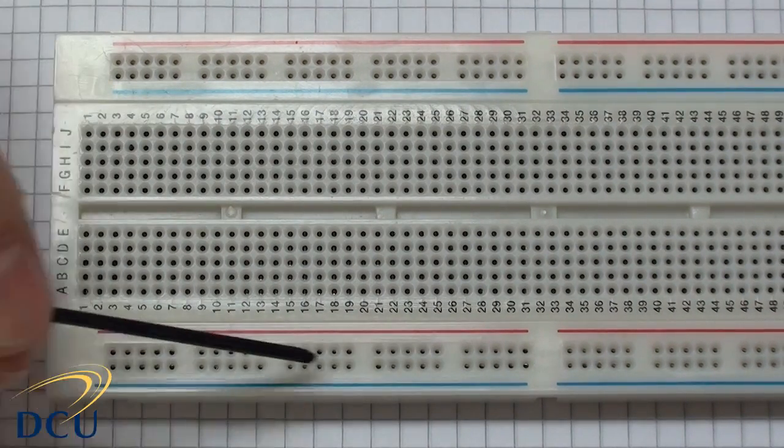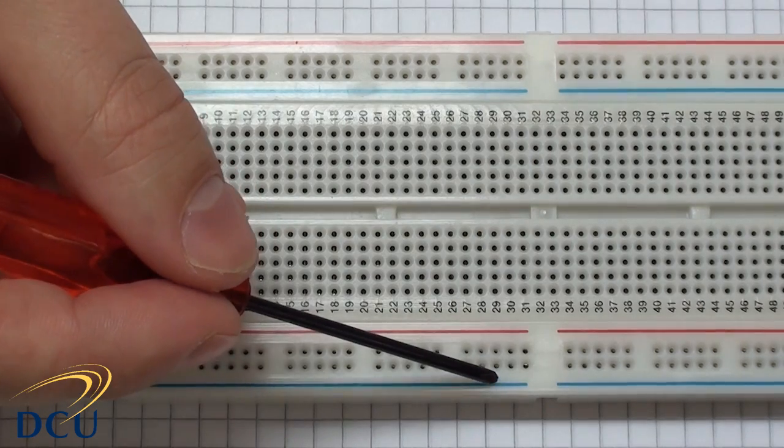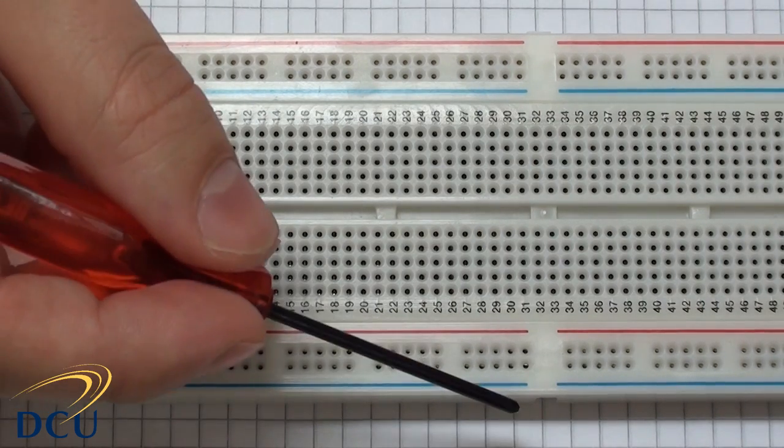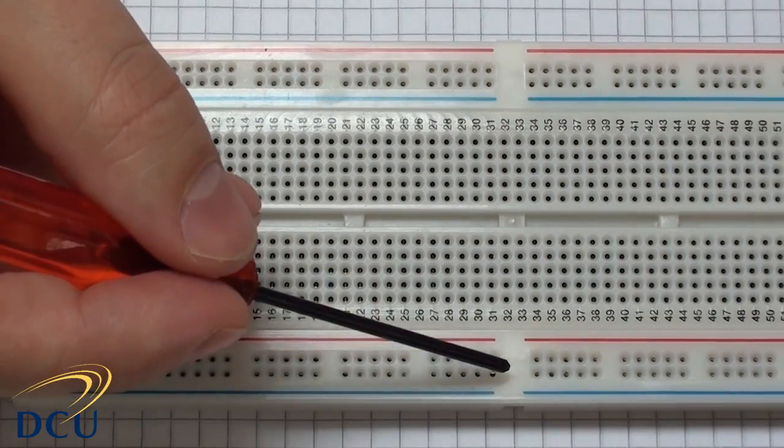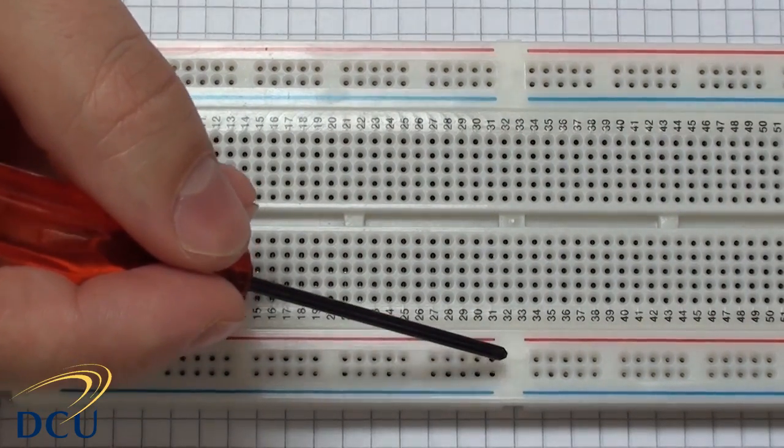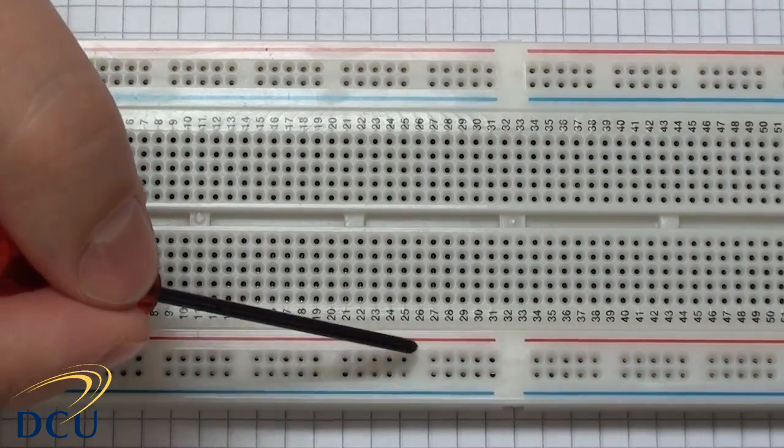Along with this we have two rails, two rows: the ground rail and the plus five volts rail is what we're going to use them for. You will notice that on some boards there's a gap here.